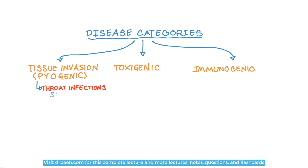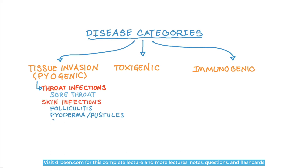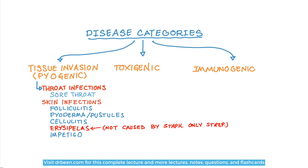Biogenic infections are divided into two types. One are the infections of the throat or pharynx — that is a sore throat or pharyngitis caused by Streptococcus pyogenes — and then there are the skin infections. Skin infections range anywhere from folliculitis, that is infection of a follicle, to cellulitis. One infection particularly specific to Streptococcus pyogenes is erysipelas, which we'll talk about in a short bit.